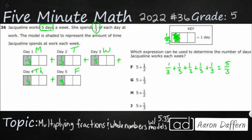She works five-thirds of a day. And if we want to, we could shade it in to figure out how to write that as a mixed number. So there's one-third, two-thirds, three-thirds, four-thirds, five-thirds.